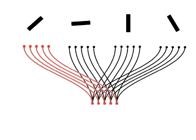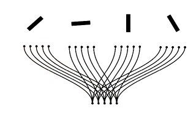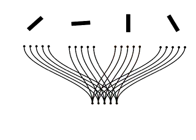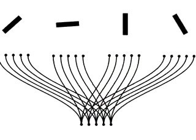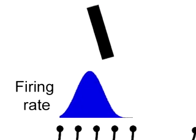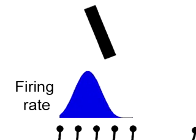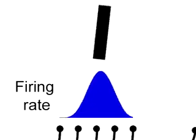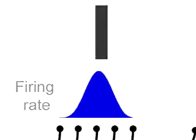The task performed by the model is to act as a switch, allowing the variable represented in any one input to be represented in the output network while ignoring the other inputs. Variables are represented in the input networks as population codes in which individual neurons have bell-shaped firing rate tuning curves with respect to stimulus orientation.